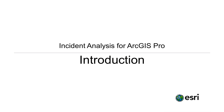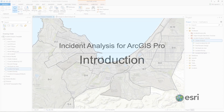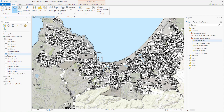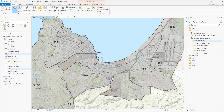Welcome to the introduction video for the Incident Analysis Template. This is an Esri Defense Solutions template which contains maps and tools that can be used to perform pattern and trend analysis on incident point locations. Versions are available for both ArcGIS Pro and ArcMap. For this demonstration, I will be showcasing the template in ArcGIS Pro. The template includes symbolized sample incident point data, road, and boundary data, which will be used as inputs into the Incident Analysis geoprocessing tools.